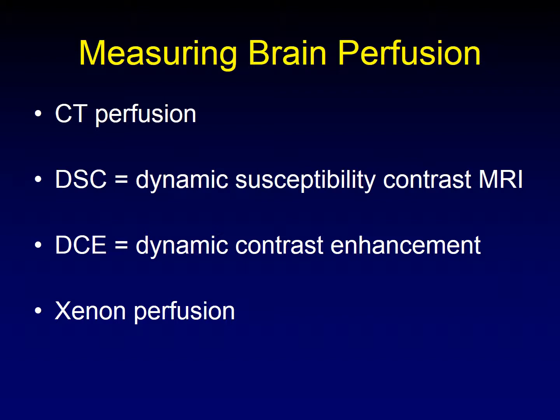It's important to understand that the first three acquisition types are not quantitative. The only one on this list that is quantitative is xenon perfusion — it can give us an actual number of milliliters per gram of brain tissue per minute. Unfortunately, xenon perfusion has gone out of style and most institutions no longer offer it. For the rest of the lecture, I'm mostly going to be talking as though we're talking about CT perfusion of the brain, but the same principles apply in MRI as well.